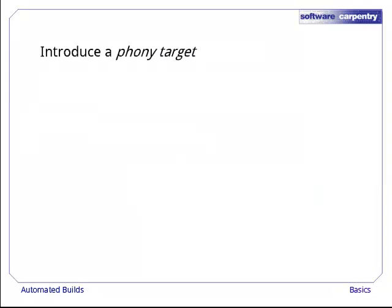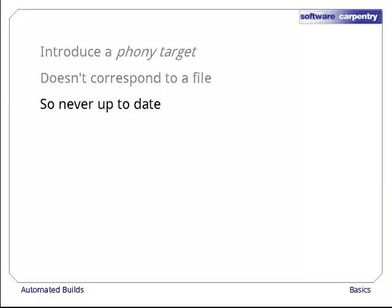To get make to build everything at once, we have to introduce a phony target. This is just a target name that doesn't correspond to any actual file. Since it doesn't actually exist, it can never be up to date, but other things can still depend on it.